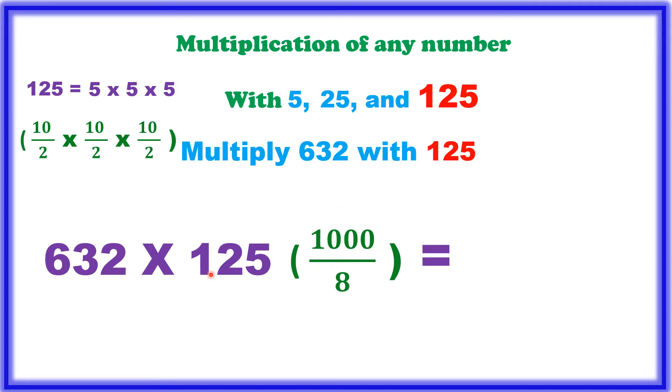Then you have to divide 632 by 8. 6 is, the first number is not divisible by 8, so you have to take 2 digits, that is 63. So 7 times 56, if you subtract it, you will get 7, 63 minus 56 is equal to 7 and 72 is exactly divisible by 8, 9 times.